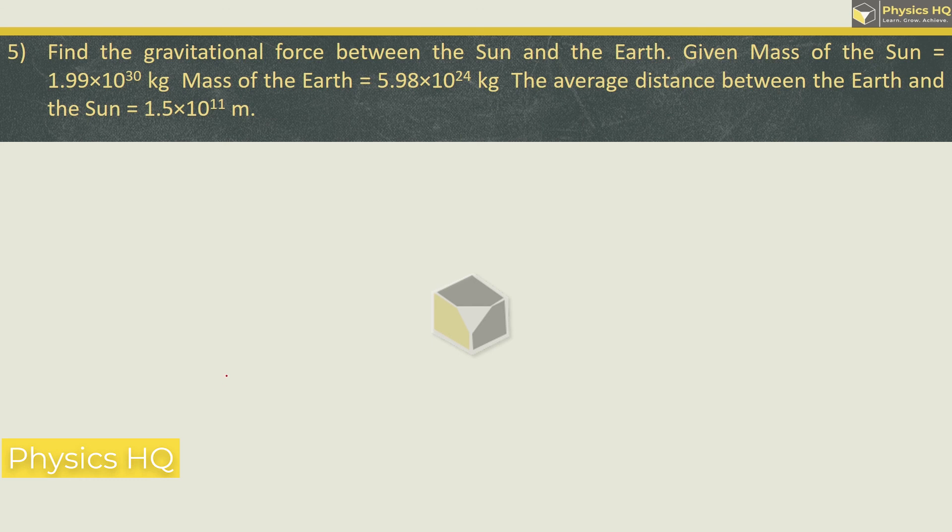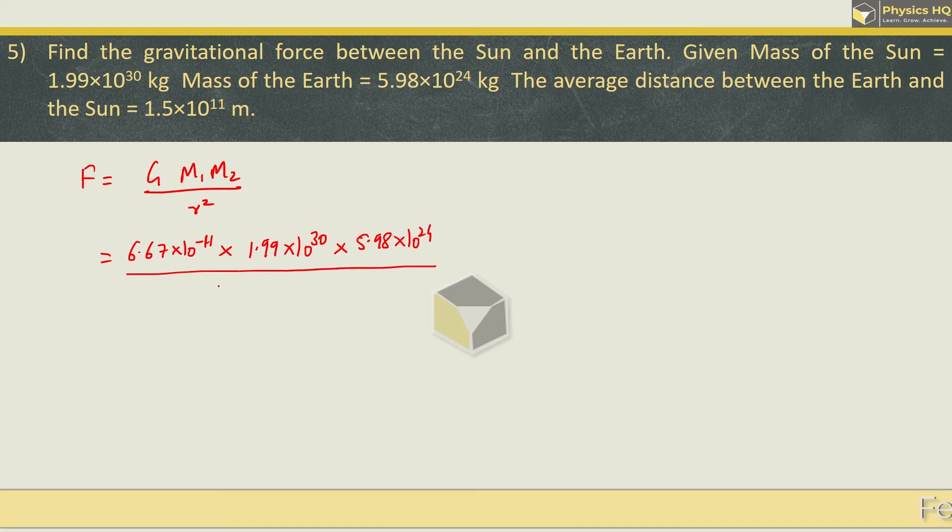Next sum we will see. Find the gravitational force between the sun and earth. Given mass of the sun as 1.99 into 10^30, mass of earth is 5.98 into 10^24, and the average distance between earth and sun is 1.5 into 10^11. So force formula is capital G M1 M2 upon R square. Capital G is 6.67 into 10^-11. Mass of sun is 1.99 into 10^30. Mass of earth is 5.98 into 10^24.